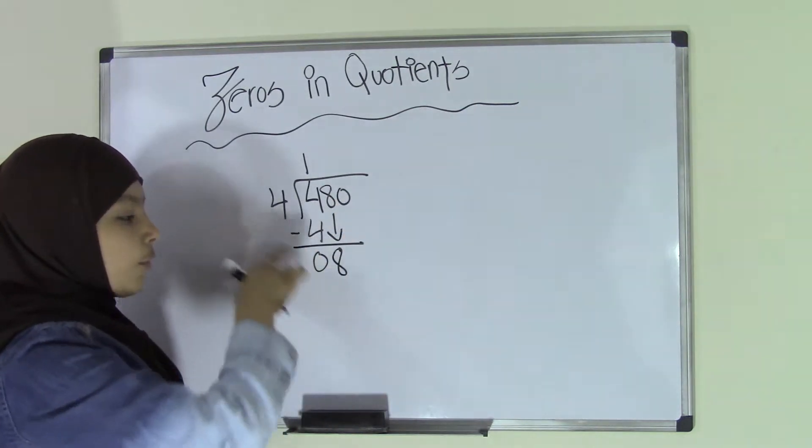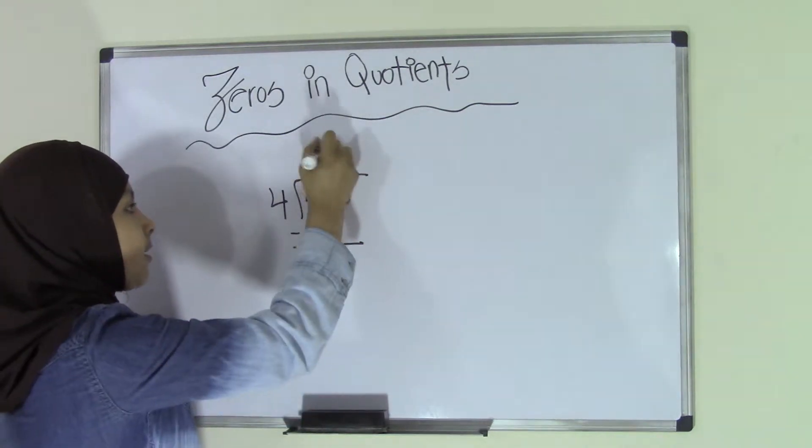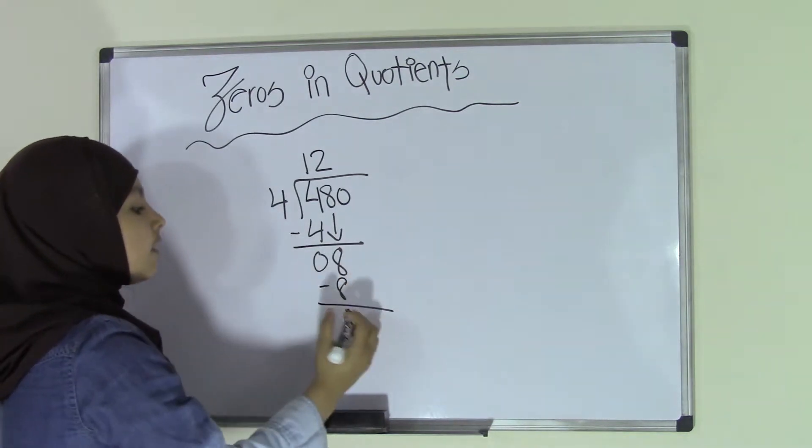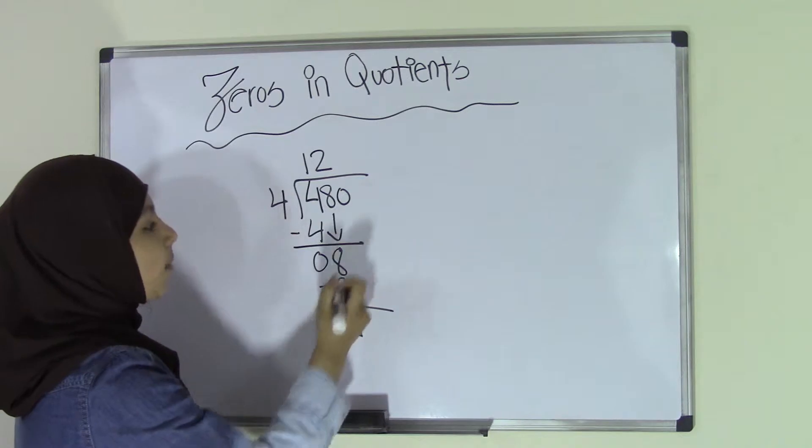So how many times does 4 go into 8? Two times, right? So 4 times 2 would equal 8. Now we have 0 left, right? So this 0 is just part of the problem.